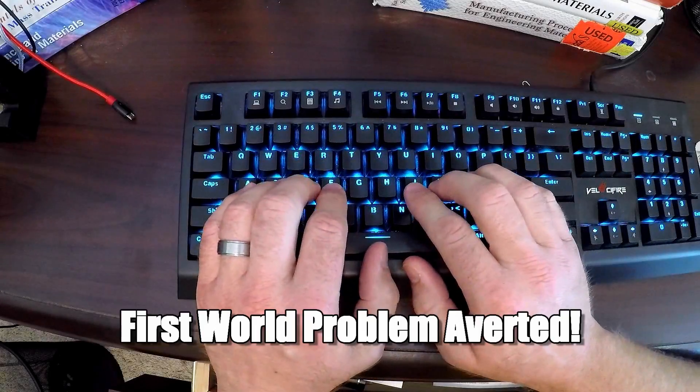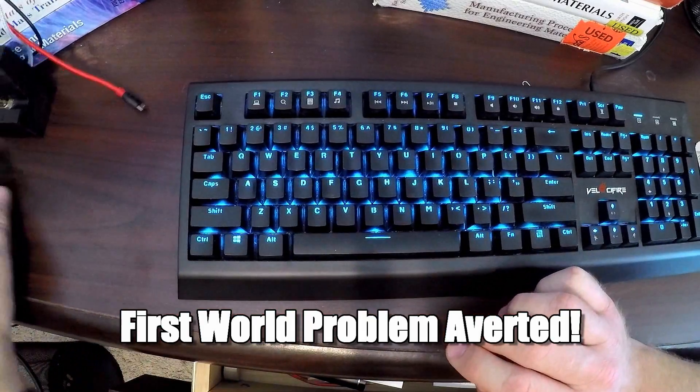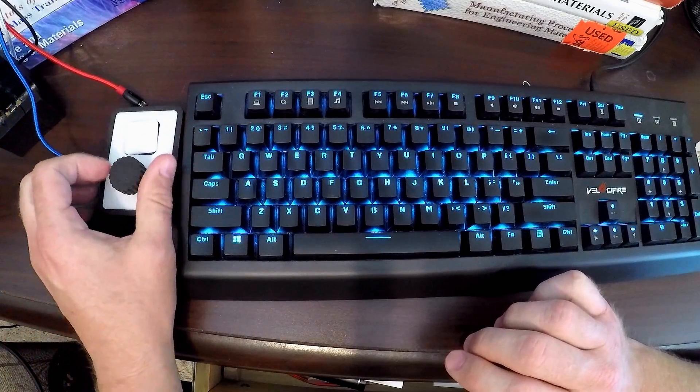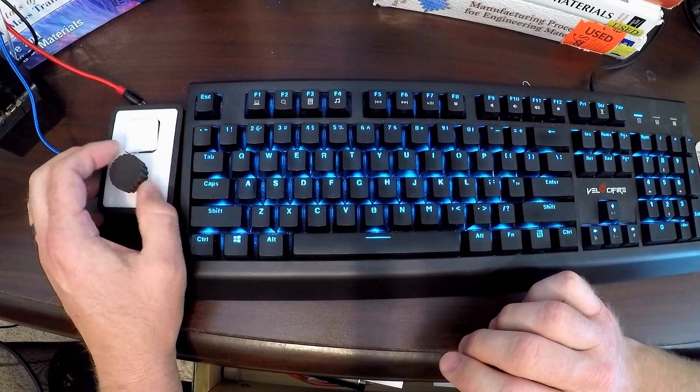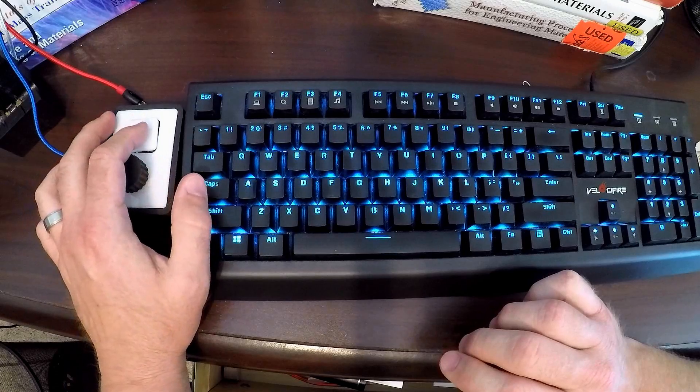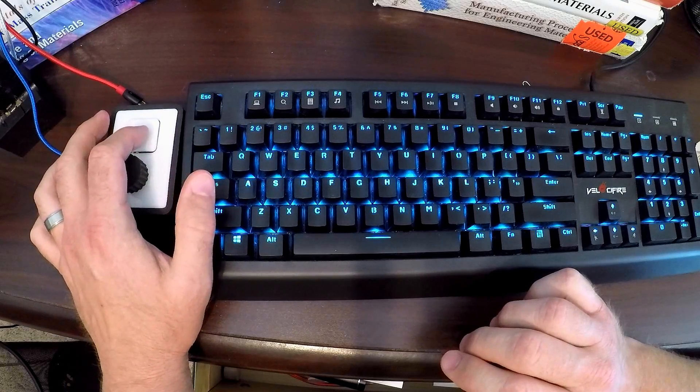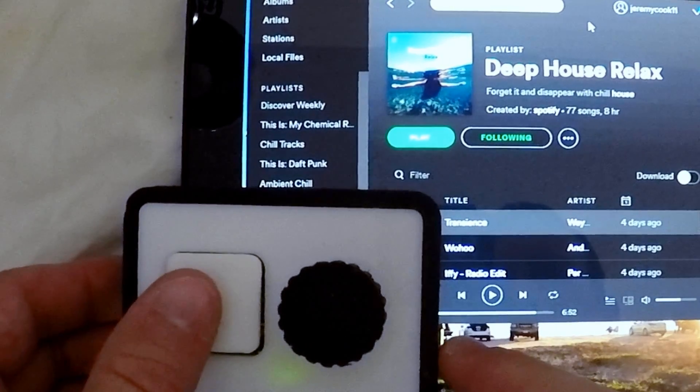Now this problem is solved. Rather than fumbling around on my keyboard, I can simply reach over and adjust the volume with my new knob. If I want the music to stop, there's also just one button to hit for that. Here it is in action on top of my screen.